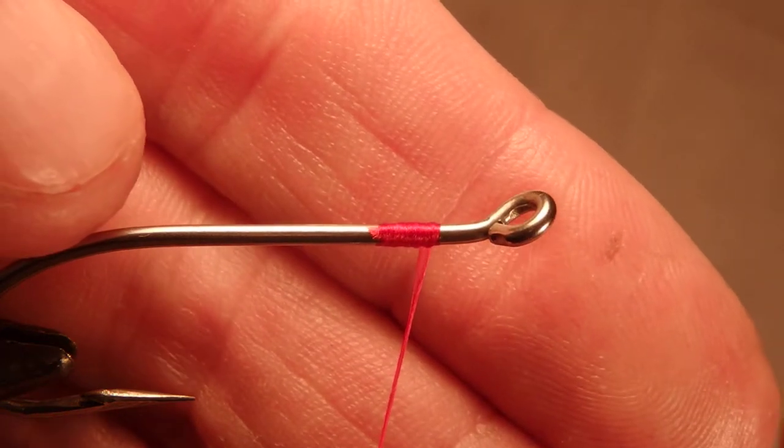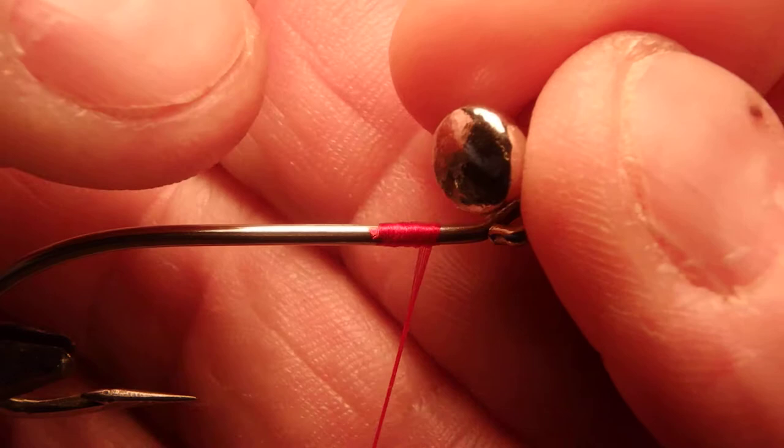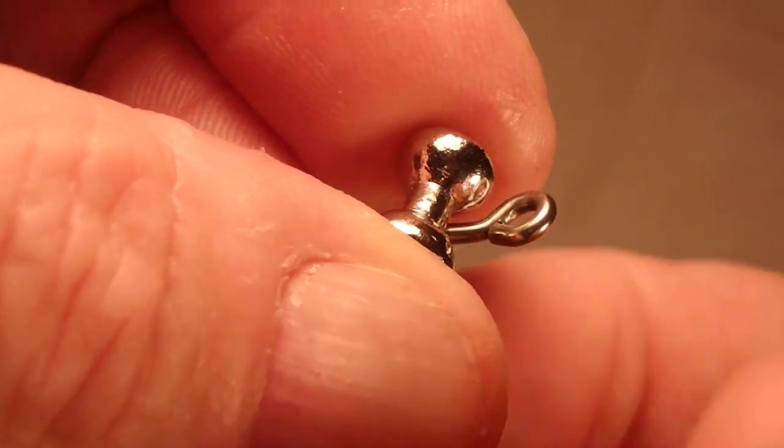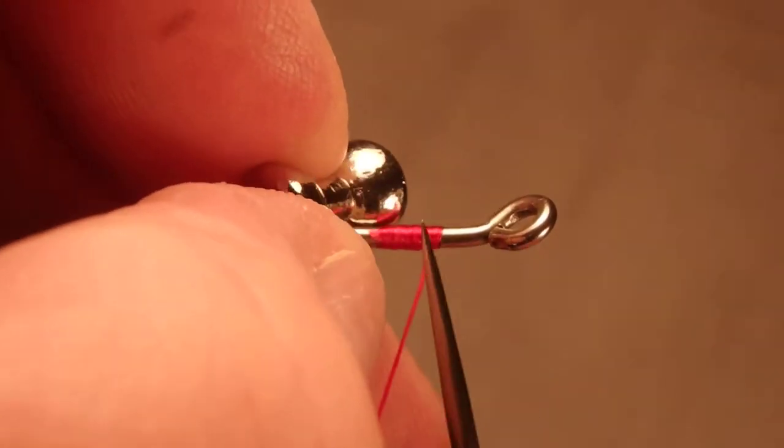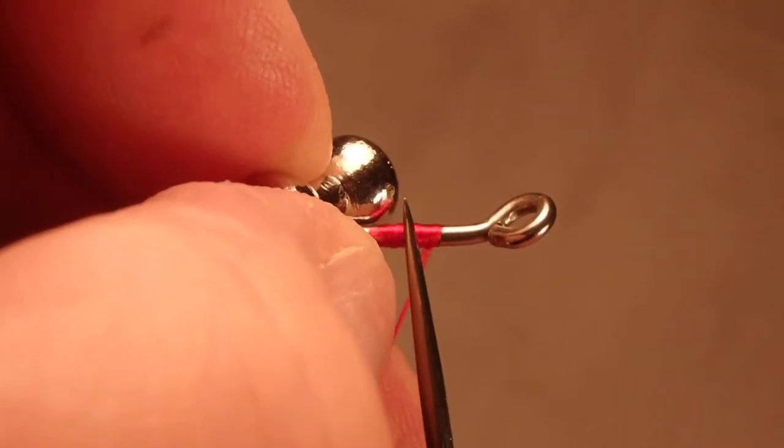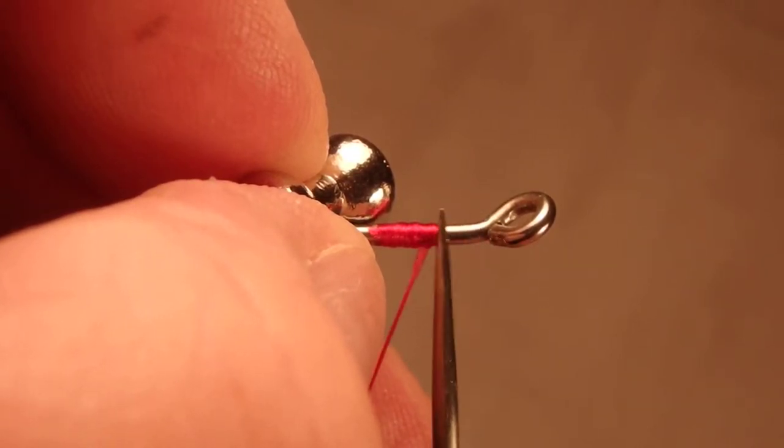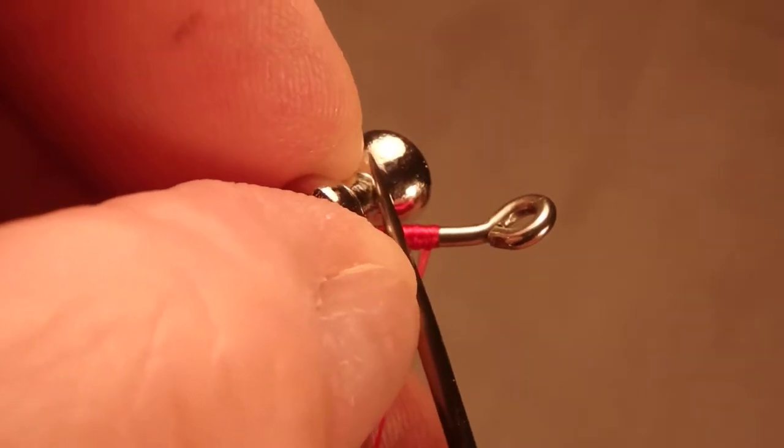Today we are going to attach the eyes to the hook prior to attaching the snailed trailer hook. So I have already jammed the thread on the hook. You notice I've left the front of the shaft of the hook bare. This is heavy thread to lash the eyes.